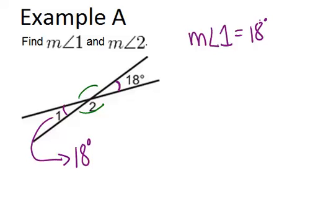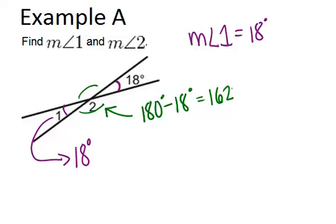Now in order to find angle 2, we have to use our knowledge of linear pairs. Angle 1 and angle 2 form a linear pair, and so do angle 2 and the 18 degree angle, because they make a straight line — that's where the word linear comes from. Linear pair angles always add up to 180 degrees. So if angle 1 is 18 degrees, we can figure out angle 2 by doing 180 minus 18, and we get 162 degrees. So the measure of angle 2 is 162 degrees.